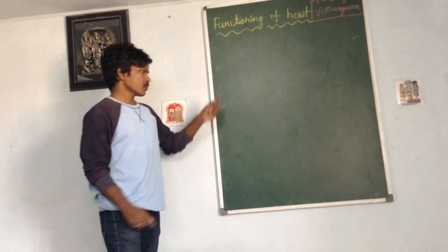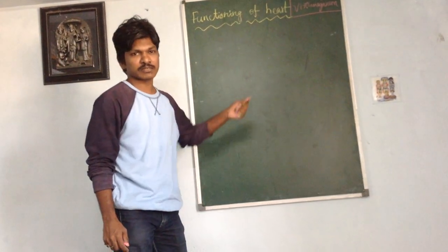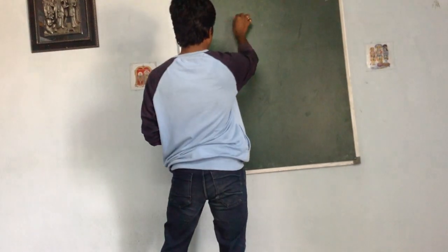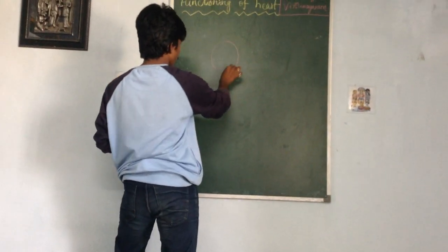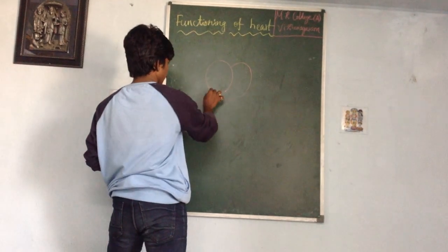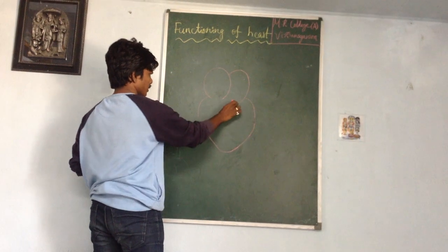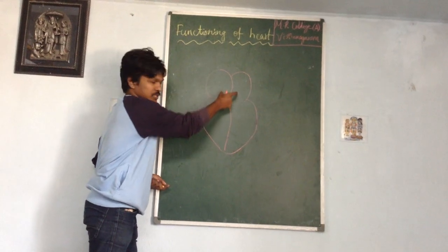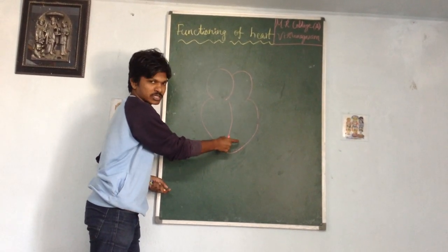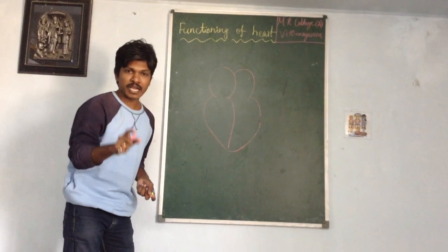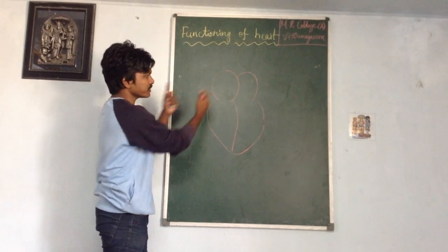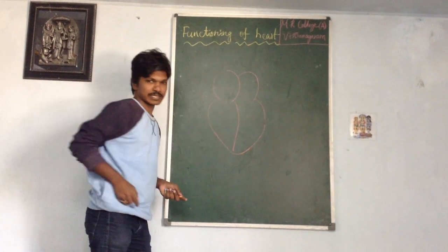Before going to discuss the functioning of heart, first of all we should know the major structures of the heart. In a normal heart, there are four chambers. The upper chambers are called atrium, and the lower chambers are called ventricles. When we compare the atrium, they are broader.